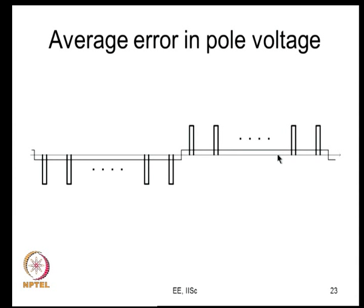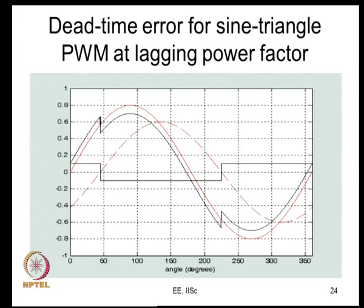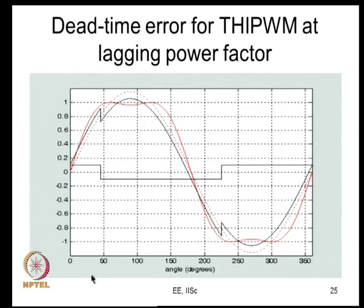Looking at the average error in the pole voltage: this is sine triangle PWM where the average pole voltage is expected to be sinusoidal, but actually changes due to dead time. If you compensate by adding the negative of this error voltage to the modulating signal you can get rid of the error. This picture shows the fundamental sinusoid, the fundamental voltage you get, and the average pole voltage which contains triplen frequency components that vanish in line-to-line voltage and load voltage.